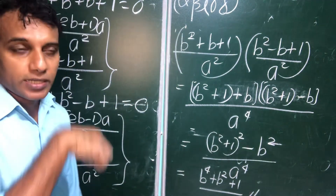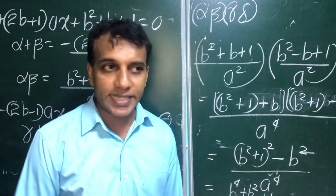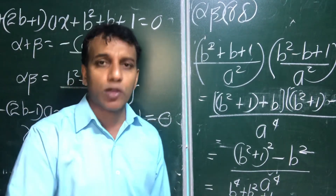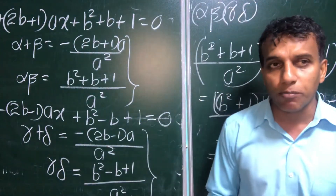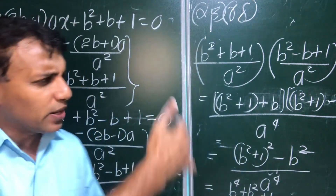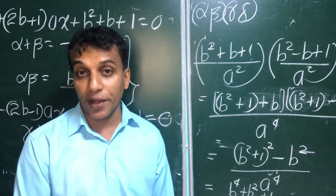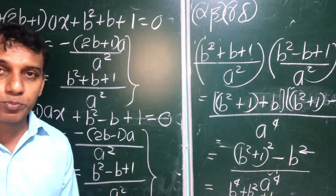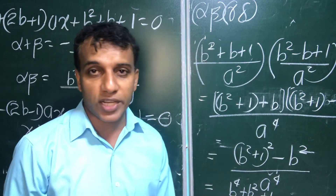In summary: for any modulus equation, mod x equals x when x ≥ 0, and mod x equals minus x when x < 0. From this we build two quadratic equations. For real roots, delta ≥ 0, which gave c ≤ 1/4. This completes the full solution for this modulus question.